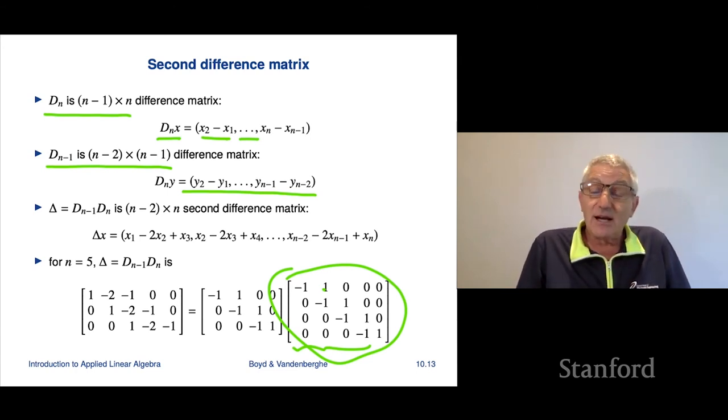Now, I can actually multiply these two matrices because let's see. I can have Dn minus 1 times Dn, and that's an n minus 2 by n. That's a so-called second difference matrix.